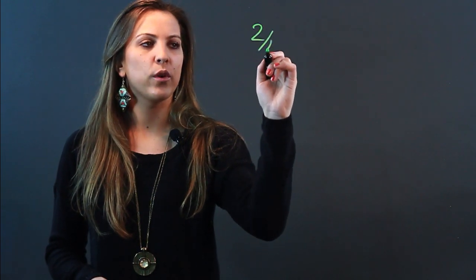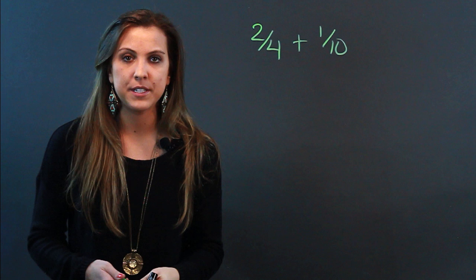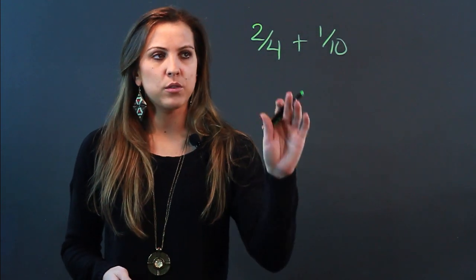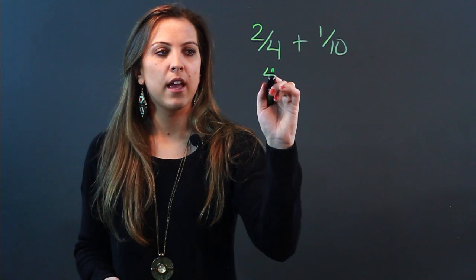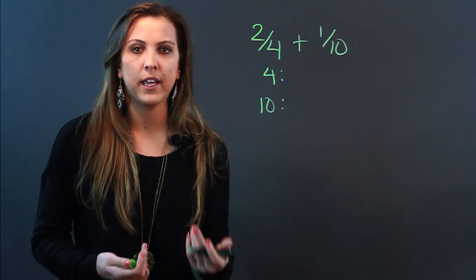If you wanted to add two fractions like 2/4 and 1/10, we can't do it until we have a common denominator. The way we're going to do that is we're going to take our two denominators and list their multiples until we see something in common.